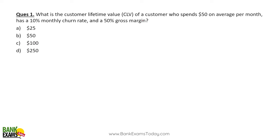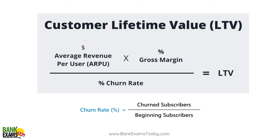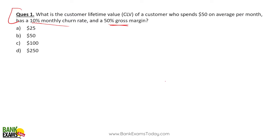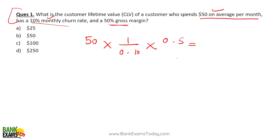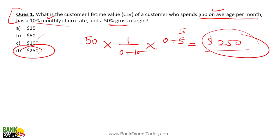What is the customer lifetime value of a customer who spends $50 on average per month, has a 10% monthly churn rate, and 50% gross margin? Very easy question — you are going to get a similar question in your exams. Just apply the formula: average revenue is $50, gross margin is 50% (0.5), churn rate is 10% (0.1). We are talking monthly basis — if revenue is monthly, churn rate is also monthly. $50 × 0.5 ÷ 0.1 = $250. D is the correct answer. Bhaut hi easy tha.